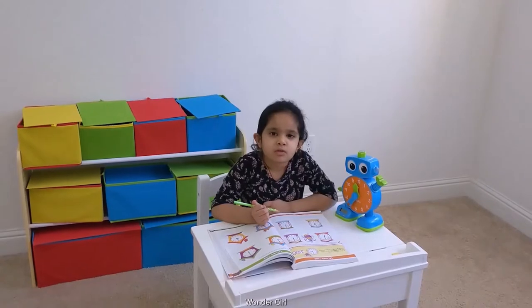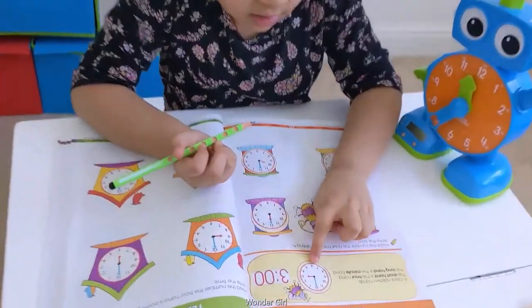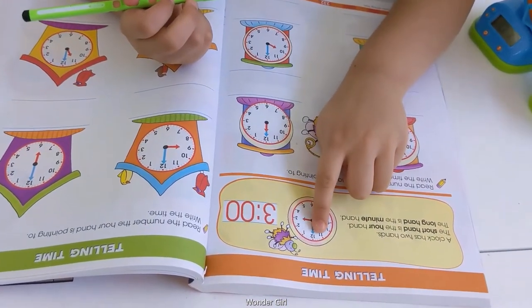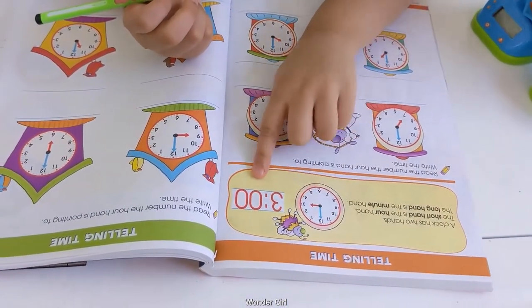Look at this clock. The small hand is on 3 and the big hand is on 12. That means it's 3 o'clock.